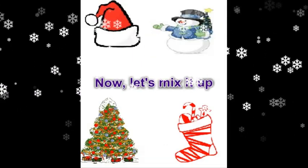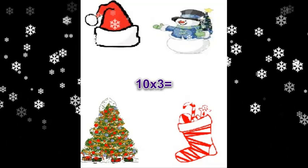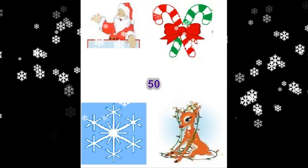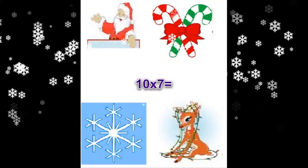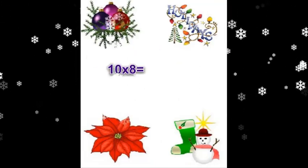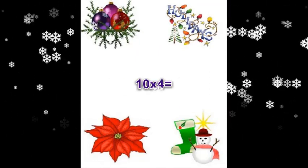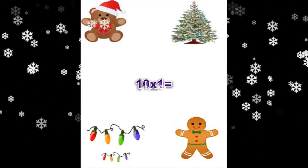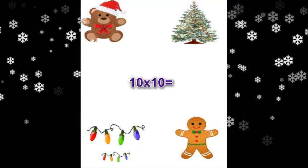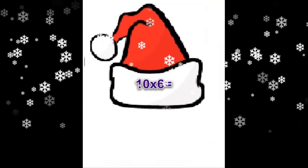Okay, now let's mix it up. Ten times twelve equals one hundred twenty. Ten times three equals thirty. Ten times five equals fifty. Ten times eleven equals one hundred ten. Ten times seven equals seventy. Ten times eight equals eighty. Ten times four equals forty. Ten times nine equals ninety. Ten times ten equals one hundred. Ten times six equals sixty.